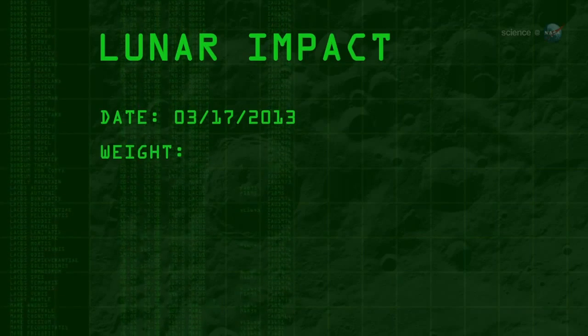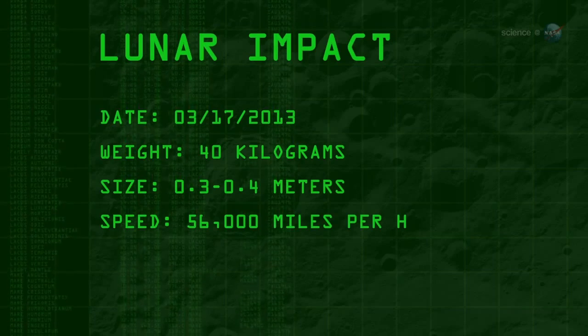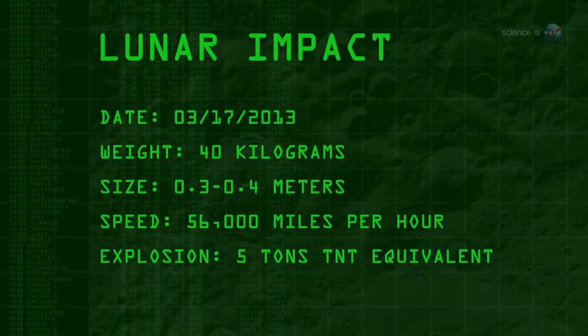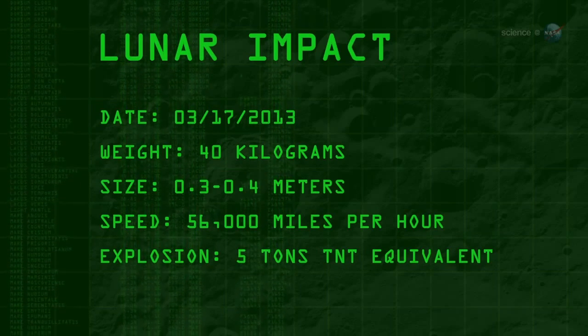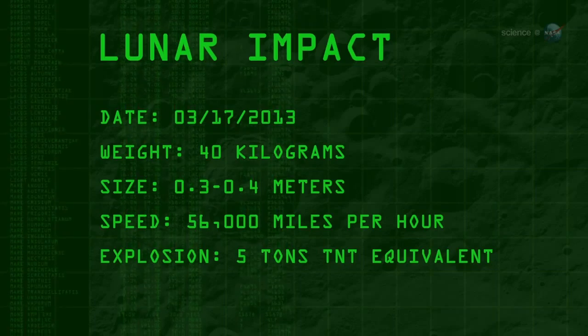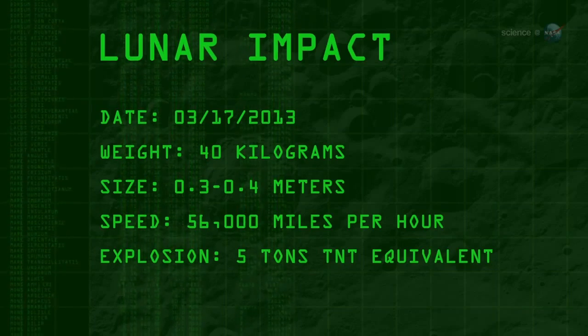The 40-kilogram meteoroid, measuring 0.3 to 0.4 meters wide, hit the Moon traveling 56,000 miles per hour. The resulting explosion packed as much punch as five tons of TNT.